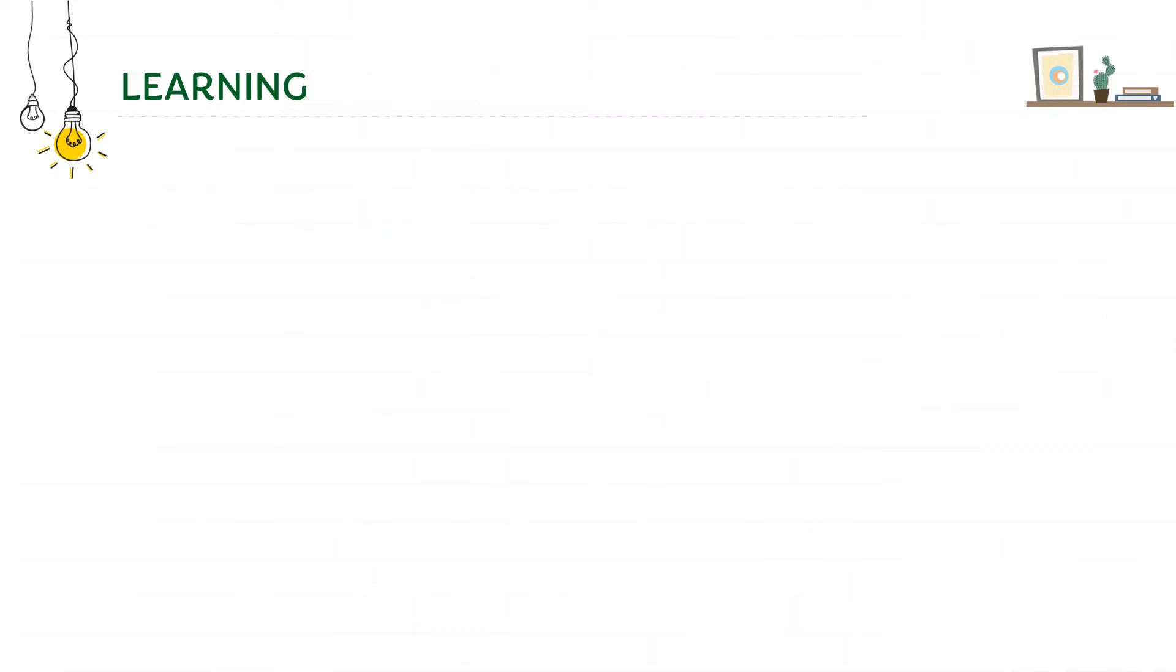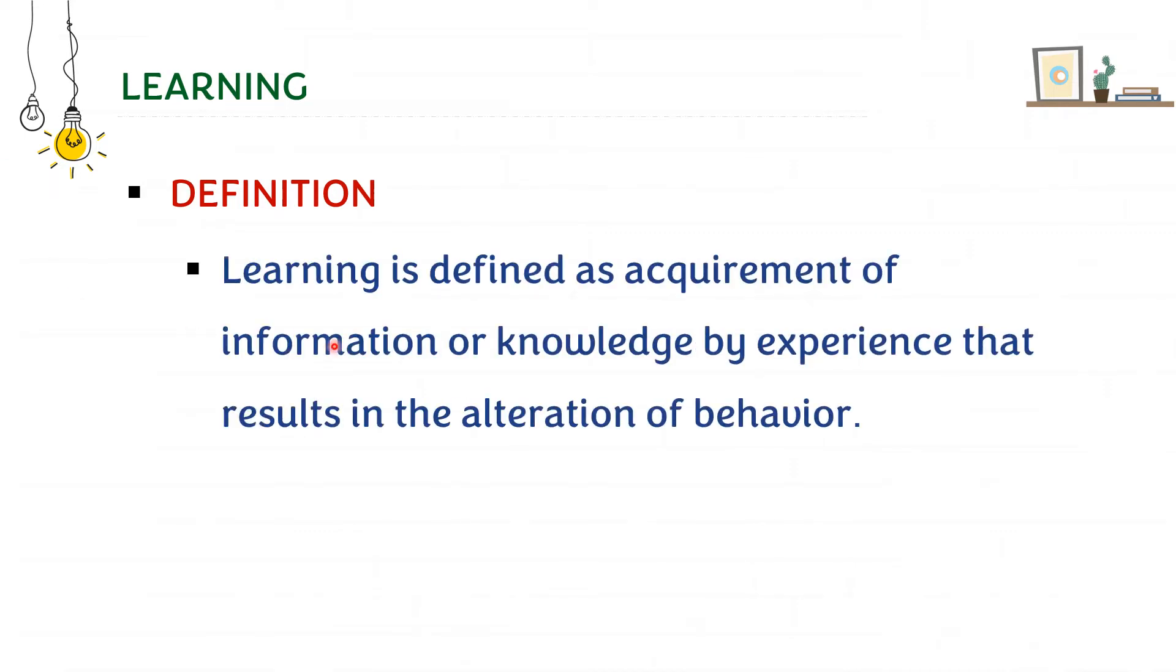Before starting the answer proper, you have to write an introduction which will include the definition of learning. We know that non-associative learning is a type of learning, so first start off with the definition of what learning is. Learning is defined as acquirement of information or knowledge by experience that results in alteration of behavior.